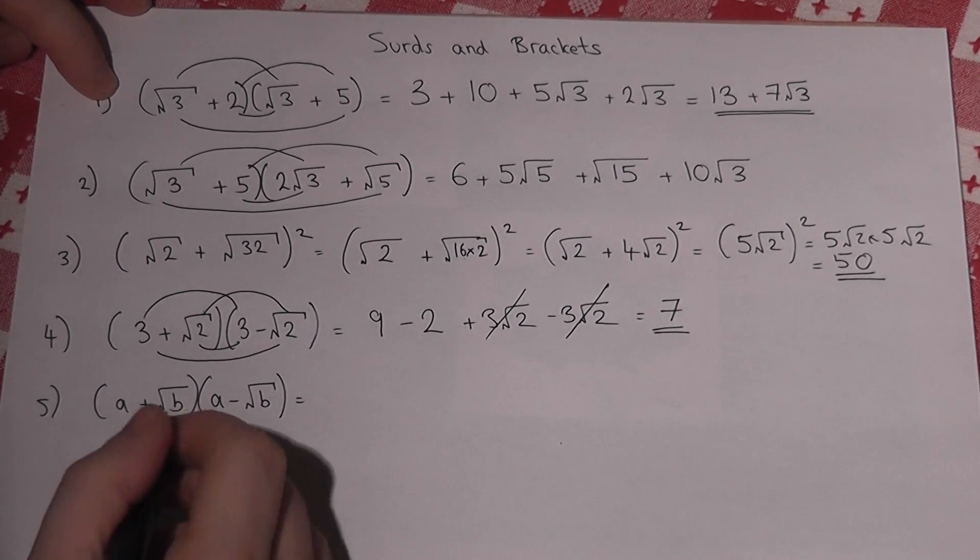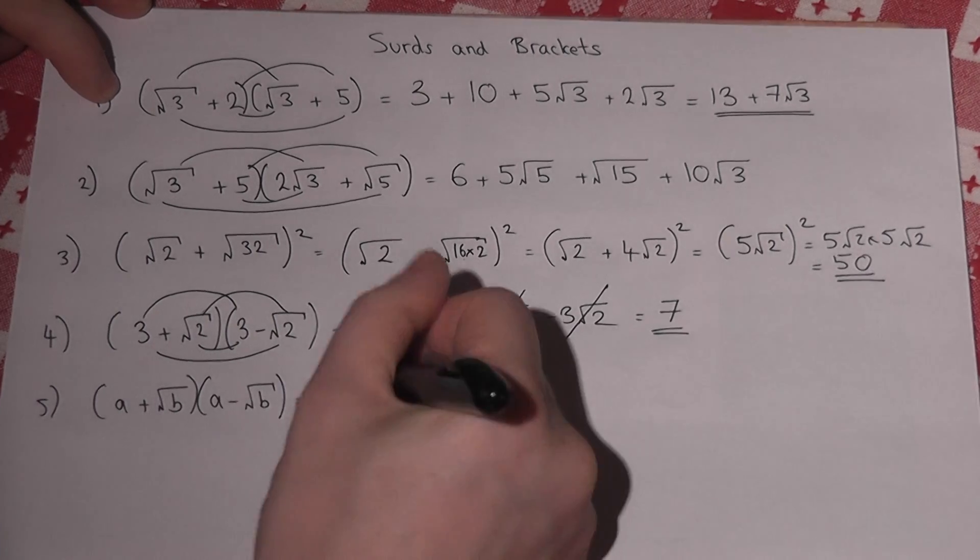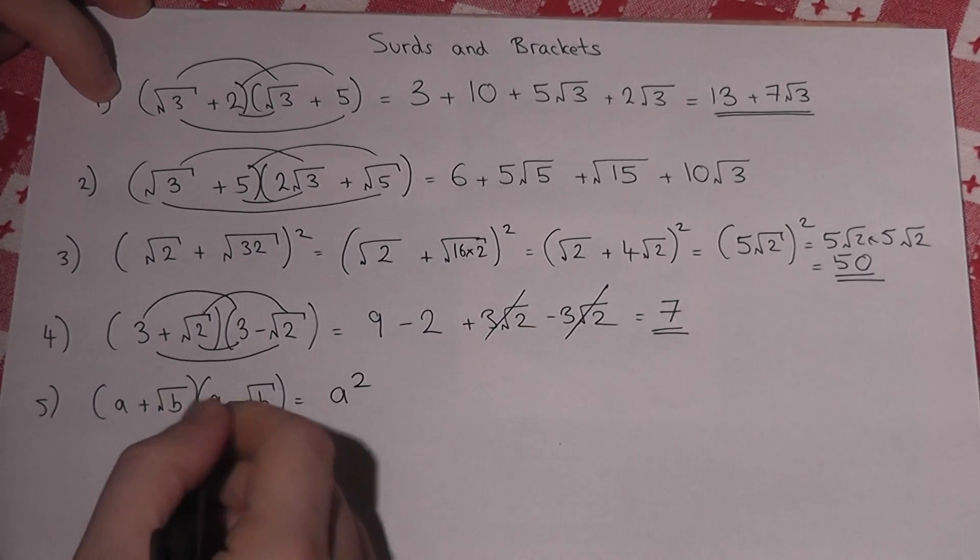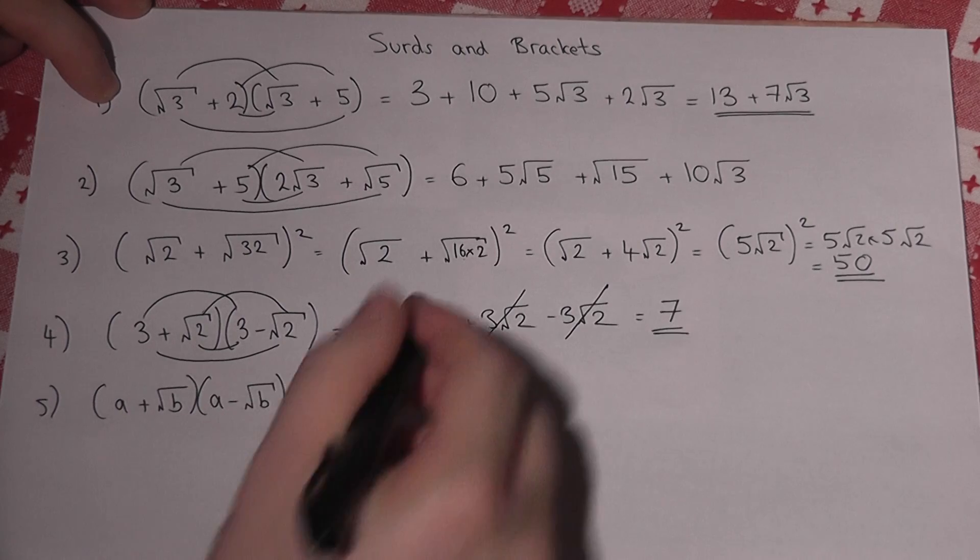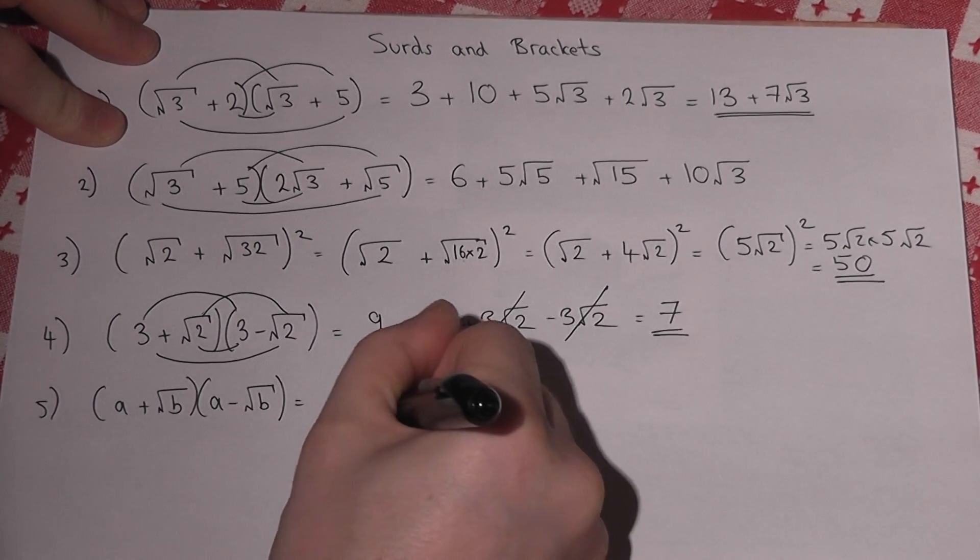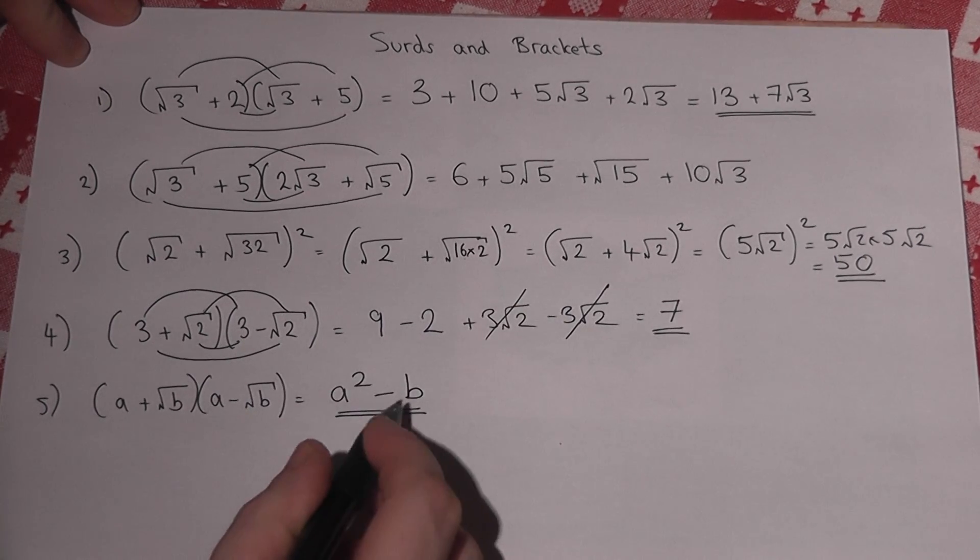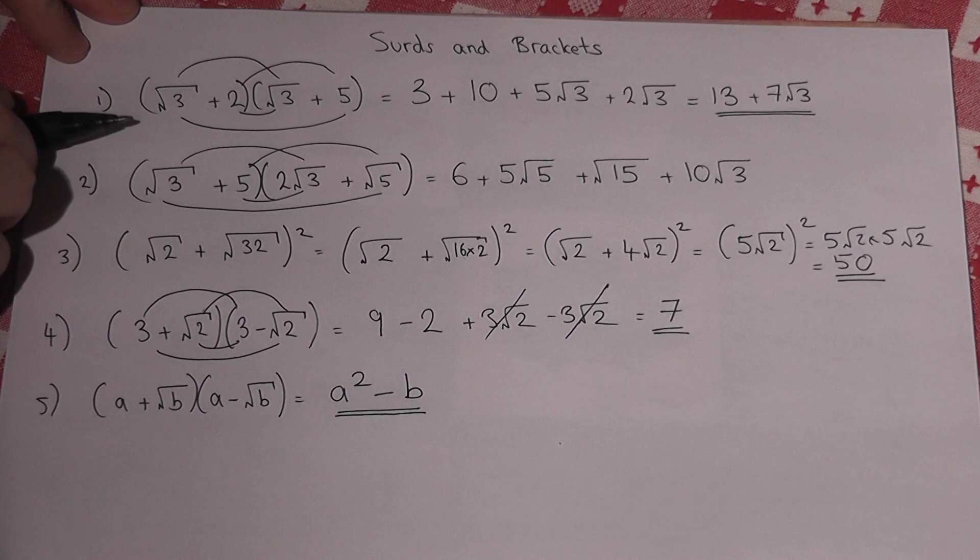And generally, if it's a plus root b and a minus root b, a times a is a squared, root b times root b is b, it's actually a squared minus b. And for A-level maths, it's worth knowing that generalisation off by heart.